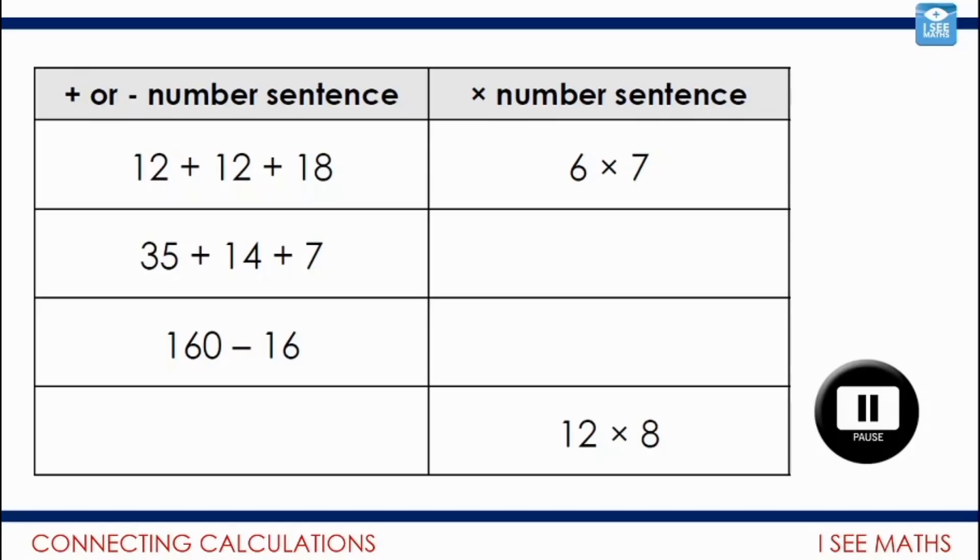Let's have a look. For the first example, I'd be looking at that in terms of 7s. How many 7s? We've got 35 plus 14 plus 7. There's 5 lots of 7, then another 2 lots of 7, and then another 7. So in total, I've got 8 lots of 7.